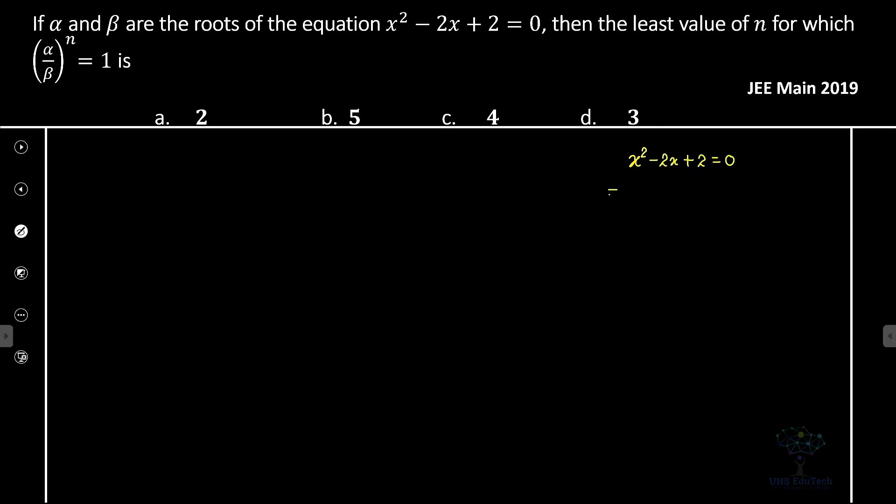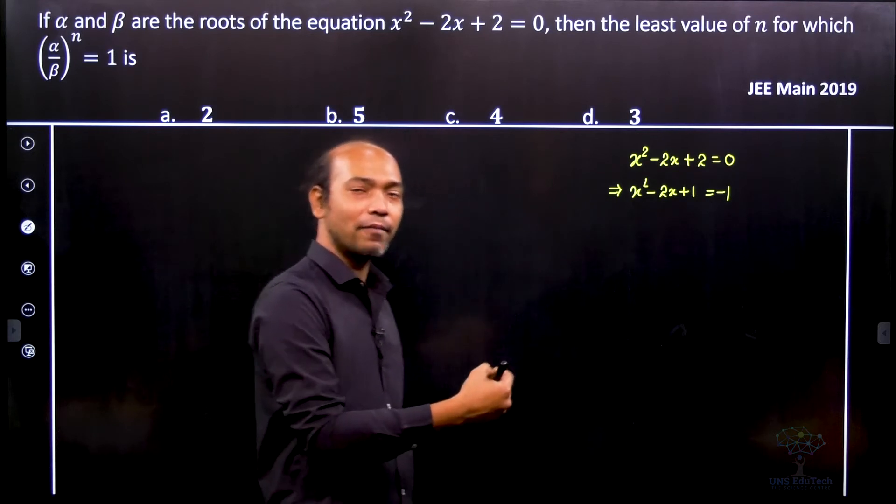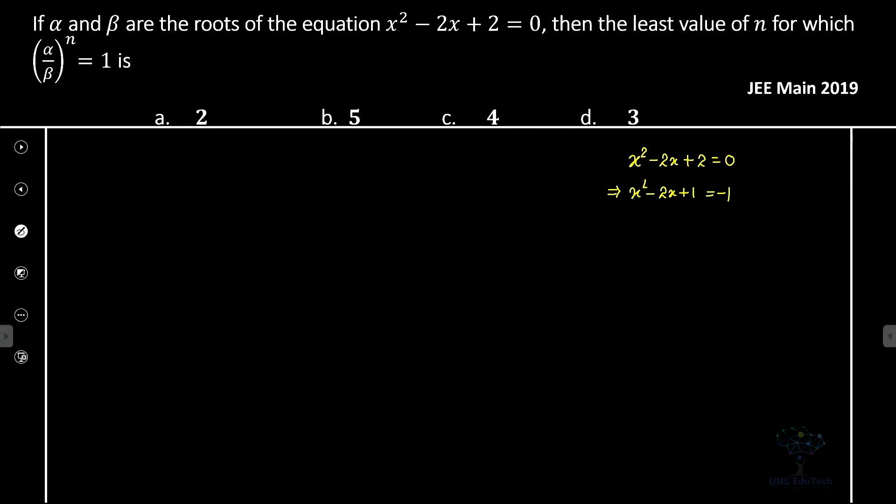Let's rewrite this in special form: x² - 2x + 1 = -1. By expressing 2 as 1 + 1, we get (x - 1)² = -1 = i². This implies that x - 1 = ±i, so x = 1 ± i.